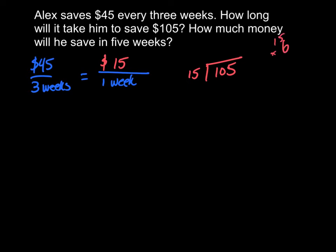So 15 times 6 is my 90. And then if I add another 15, that gives me 105. So that means I have 7 weeks here. Because I have the 6 from here, and I'm adding another 15 for a total of 7. So for this first question, how long will it take him to save $105? I have 7 weeks.